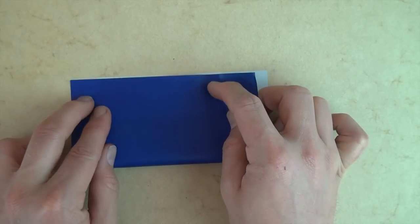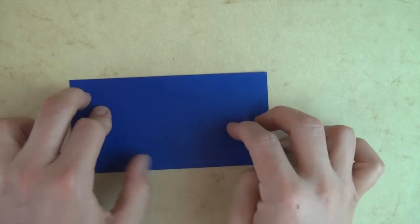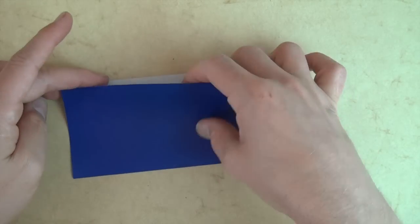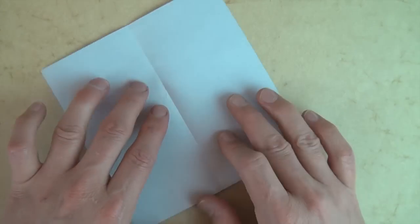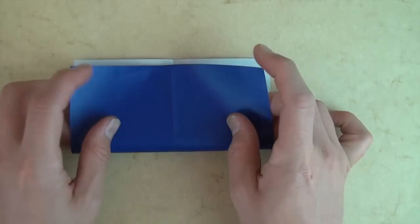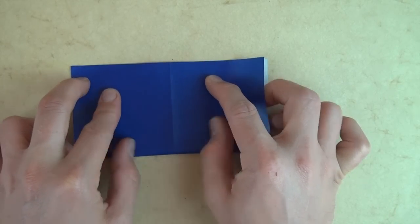Let's valley fold in half. This model starts with a square base. So let's unfold and rotate 90 degrees and fold in half in this direction.